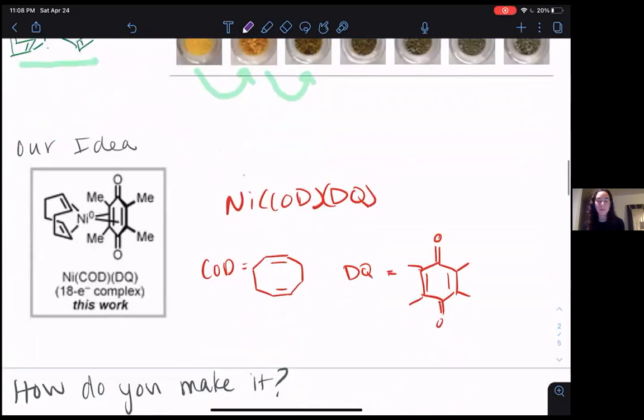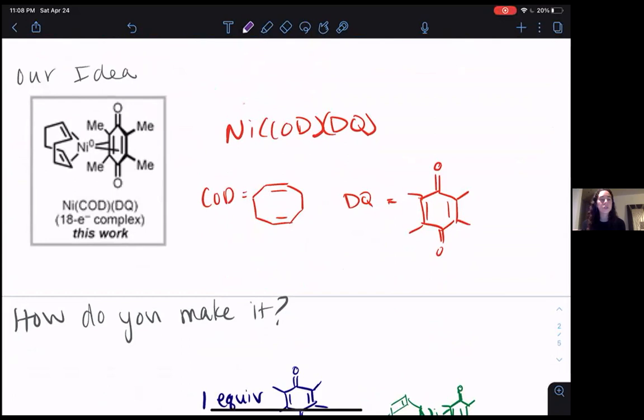We had an idea, we wanted people to be able to use our chemistry. So we resurfaced a complex, a transition metal complex that had been made in the early sixties called nickel cod DQ, where cod stands for cyclooctadiene, and DQ stands for duroquinone, which is the name of this compound here.